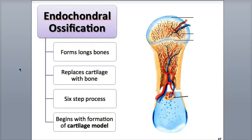During endochondral ossification, cartilage is replaced by bone. This process forms most of the bones of the body but can be best seen in a long bone. It is a little more complex than intramembranous ossification and consists of six major steps.